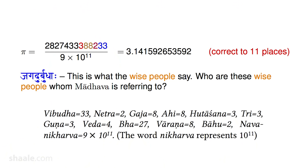In bhuta-sankhya: 'vibhudha' means devas, representing 33; 'netra' is 2; 'gaja' is 8; 'ahi' is again 8; 'hutashana' means fire, which is 3 (related to the three fires); 'guna' refers to sattva, rajas, and tamas, again 3; and 'veda' is 4.